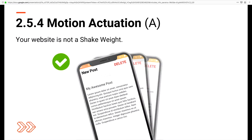The next is Motion Actuation, a Level A addition. Your site may let visitors use certain motions to perform a task — for example, shaking your device to undo text you've just typed. If your site makes use of motion gestures, you must provide a way to make the same functionality available for users who can't or don't want to perform motion gestures. You must also make sure there's a way for users to turn off these motion controls so they don't accidentally trigger a response.